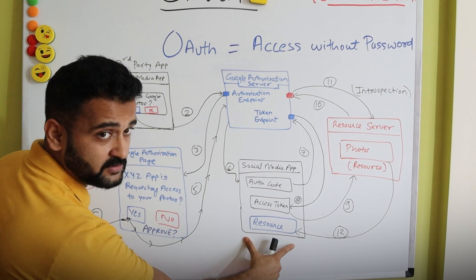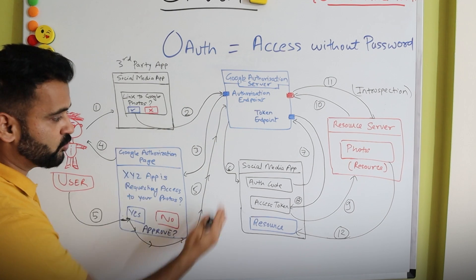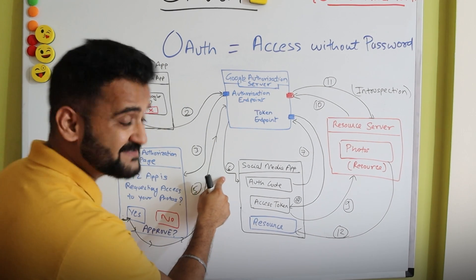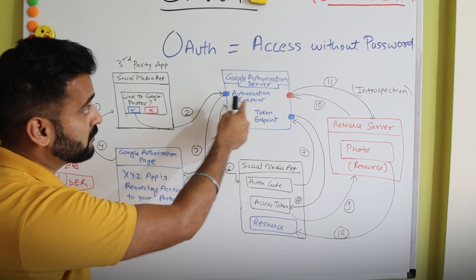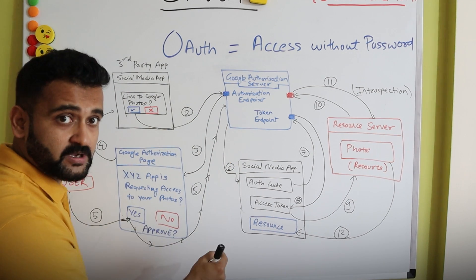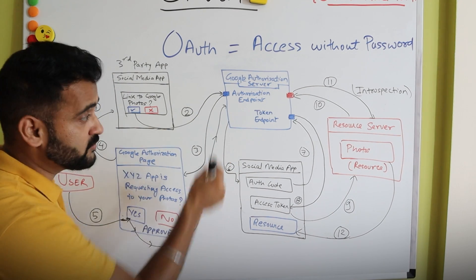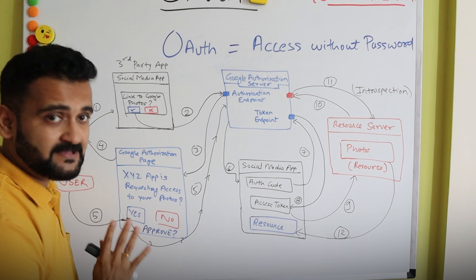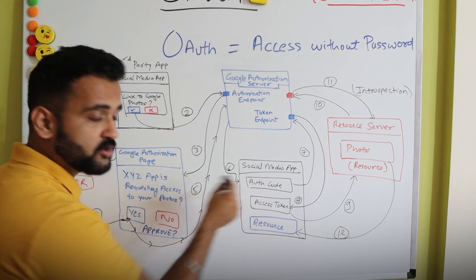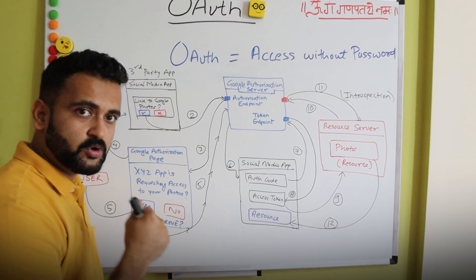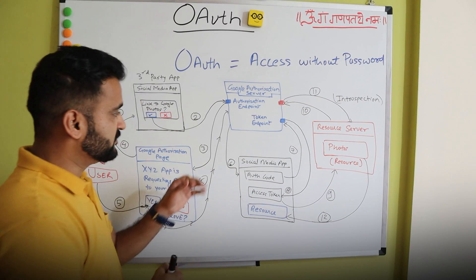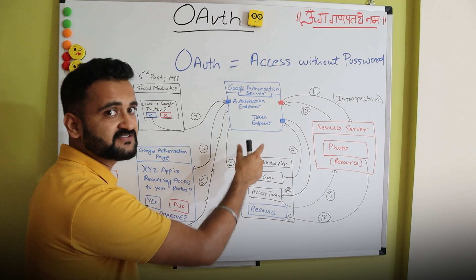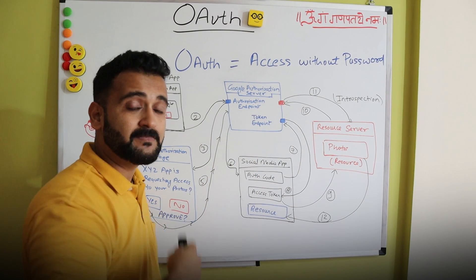At step six, this step is very important: the moment the entire workflow up to step five is completed, an authorization token — or authorization code — is sent to this social media application, because the user has now approved it.